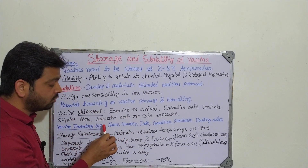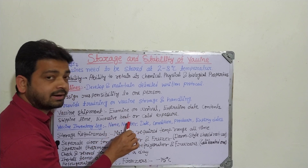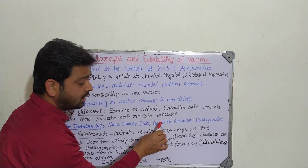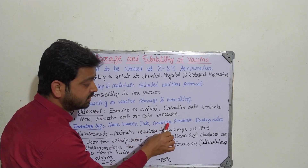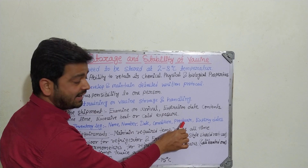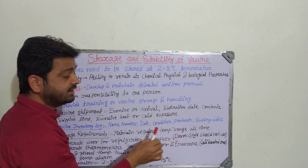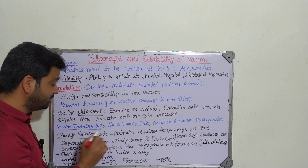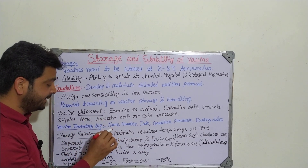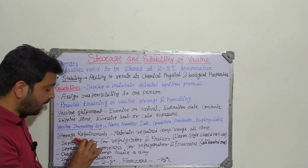Inventory control, or the vaccine inventory log, must be maintained. This includes recording the name of the vaccine, the quantity, the date received, the condition on receipt, the manufacturer, and the expiry date. All those details have to be recorded and that record must be maintained.